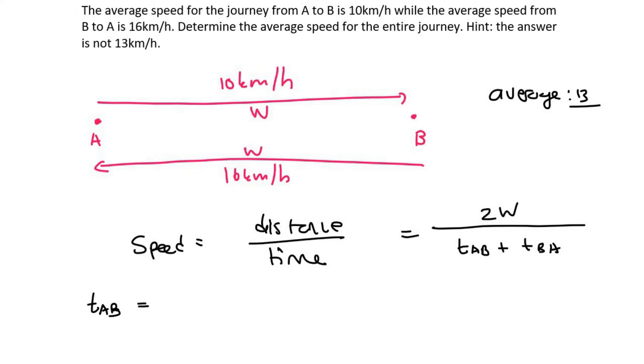Well, we should know that time is equal to distance over speed. So for A to B only, it's going to be W, and the speed is, what was the speed from A to B? It was 10. Now, your time from B to A is also going to be distance over speed. And so that's going to be W, but over 16.